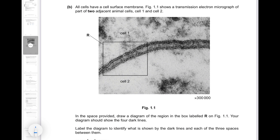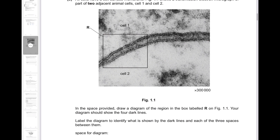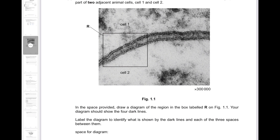In figure 1.1, you're shown a transmission electron micrograph of part of two adjacent animal cells, cell one and two. In the provided space, draw a diagram of the region in the box labeled R on figure 1.1. Your diagram should show the four dark lines. Label the diagram to identify what's shown by the dark lines and each of the three spaces between them.